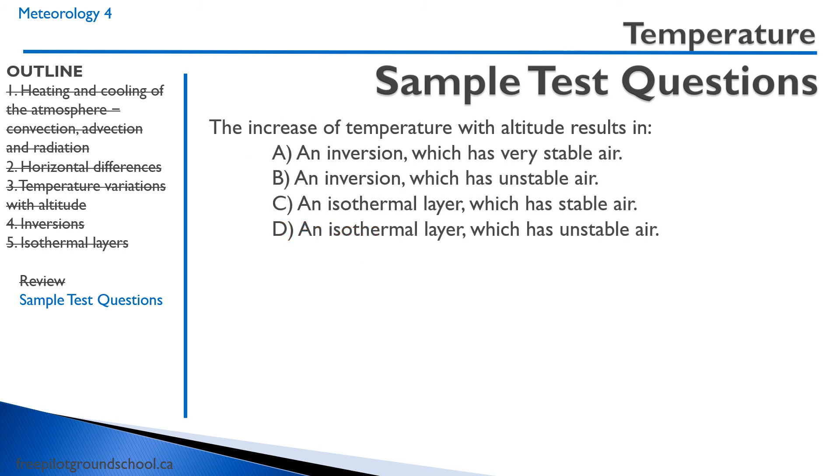An increase of temperature with altitude results in: A. An inversion, which has very stable air. B. An inversion, which has unstable air. C. An isothermal layer, which has stable air. D. An isothermal layer, which has unstable air. So remember, an increase of temperature with altitude is an inversion. So it's A and B. And inversions typically have very stable air. So the correct answer is going to be A. That concludes this lesson on temperature. Thanks for joining me, and we'll see you in our next lesson.